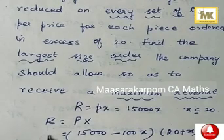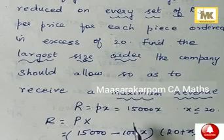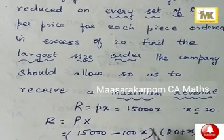Put dR by dx equal to 0, find x, substitute that x in the second order derivative d squared R by dx squared. If it is greater than 0, then function attains minimum. If it is less than 0, the function attains maximum. Idea is this, let's go.